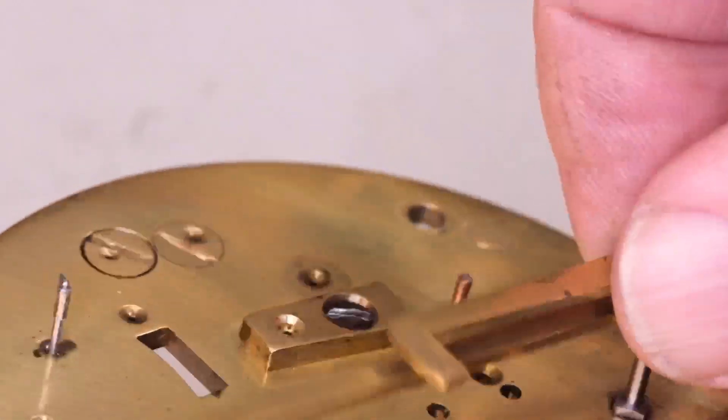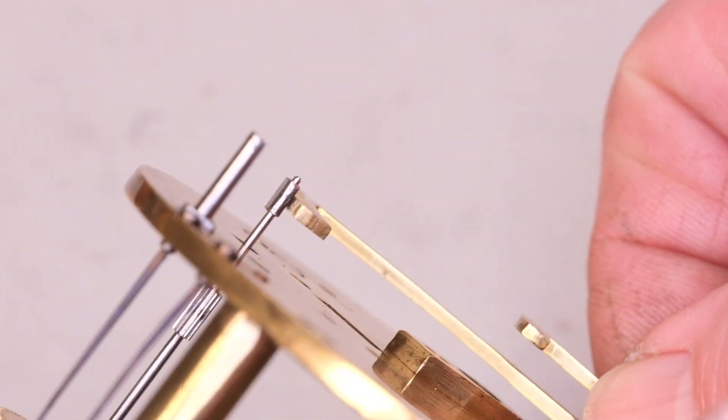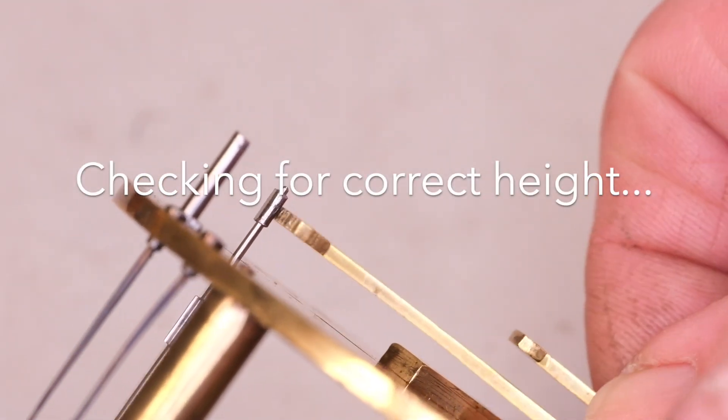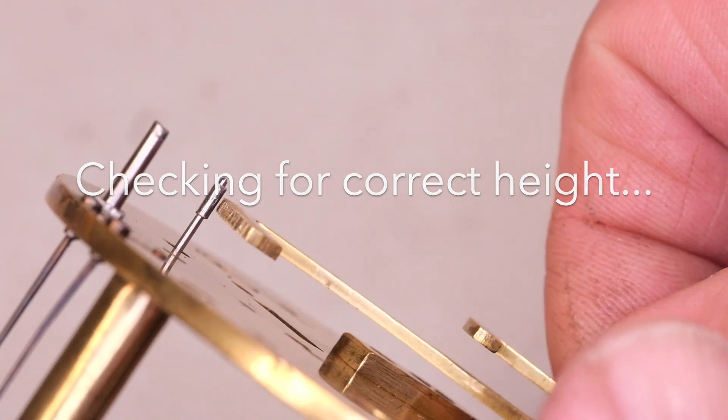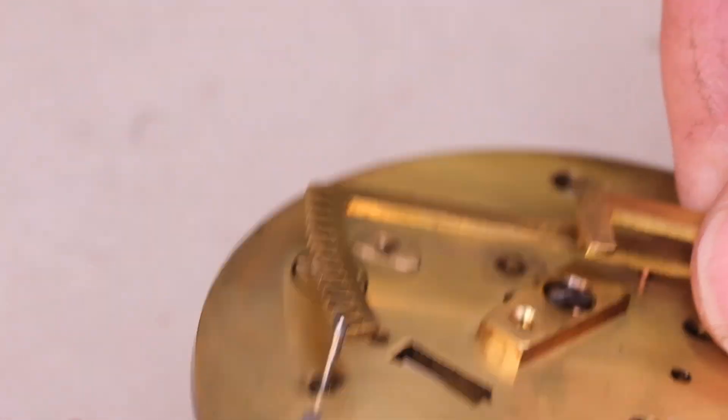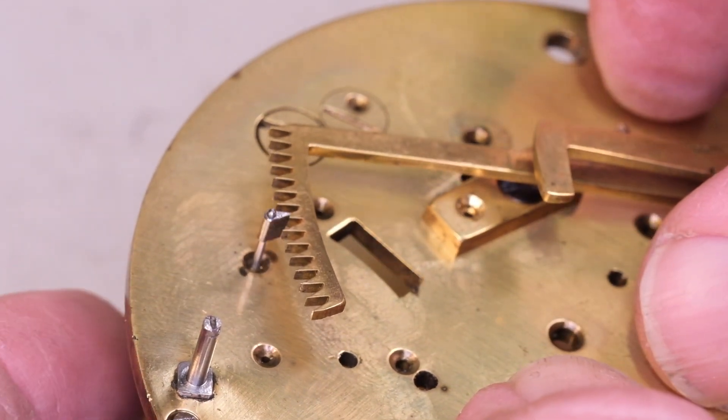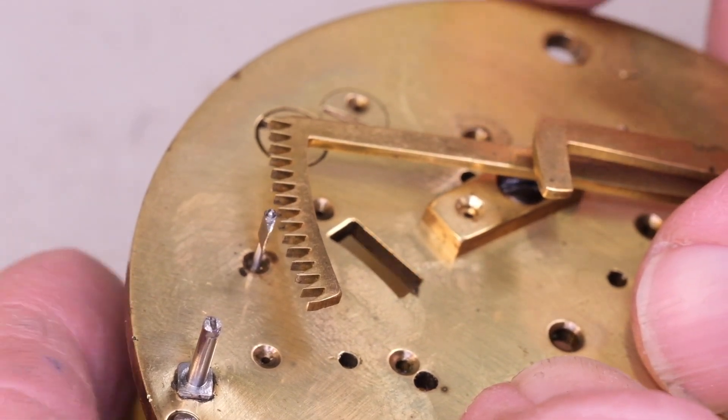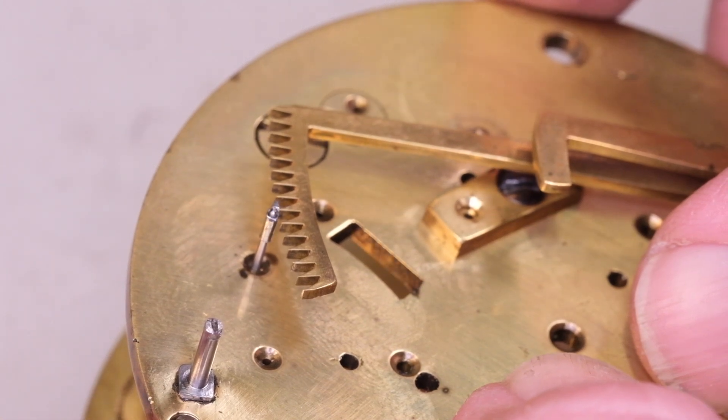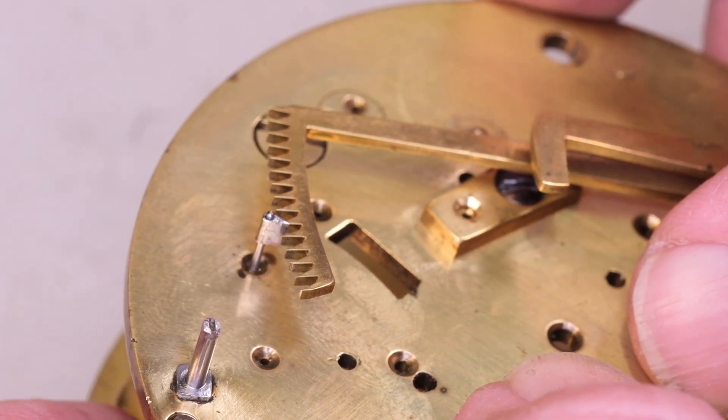So we've got to try the gathering pallet on the arbor many times until it slowly fits further and further on. I'm using the diamond file things again and an Arkansas stone to get a nice flat final finish.